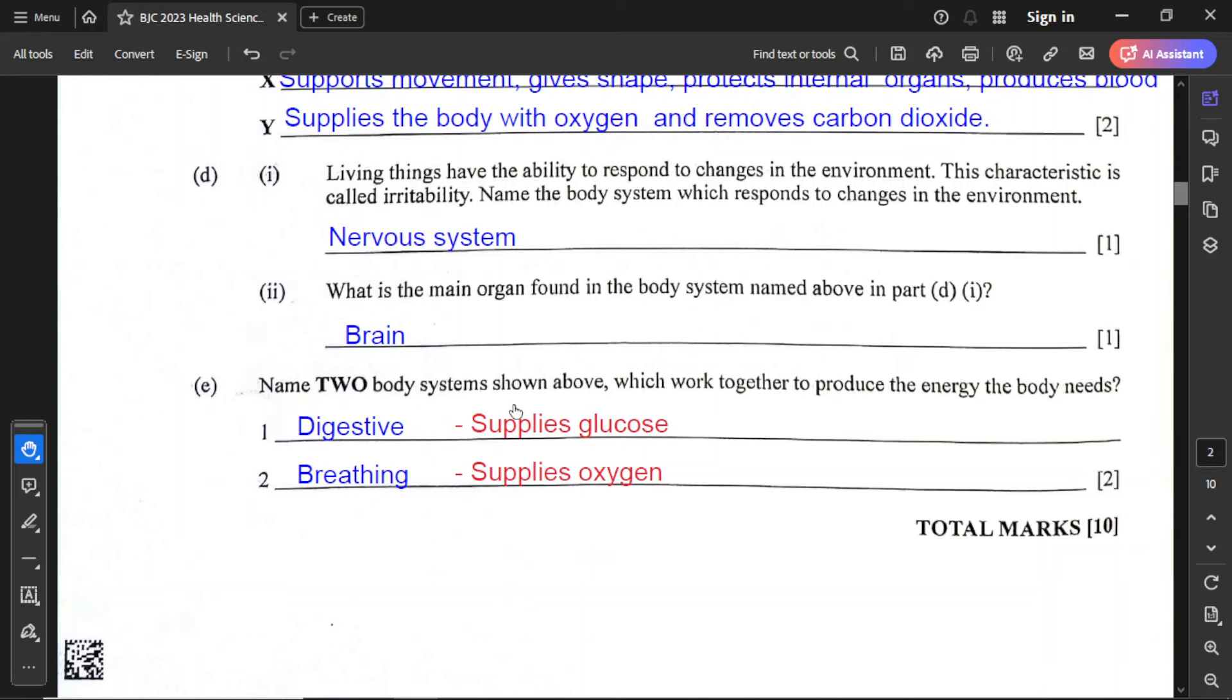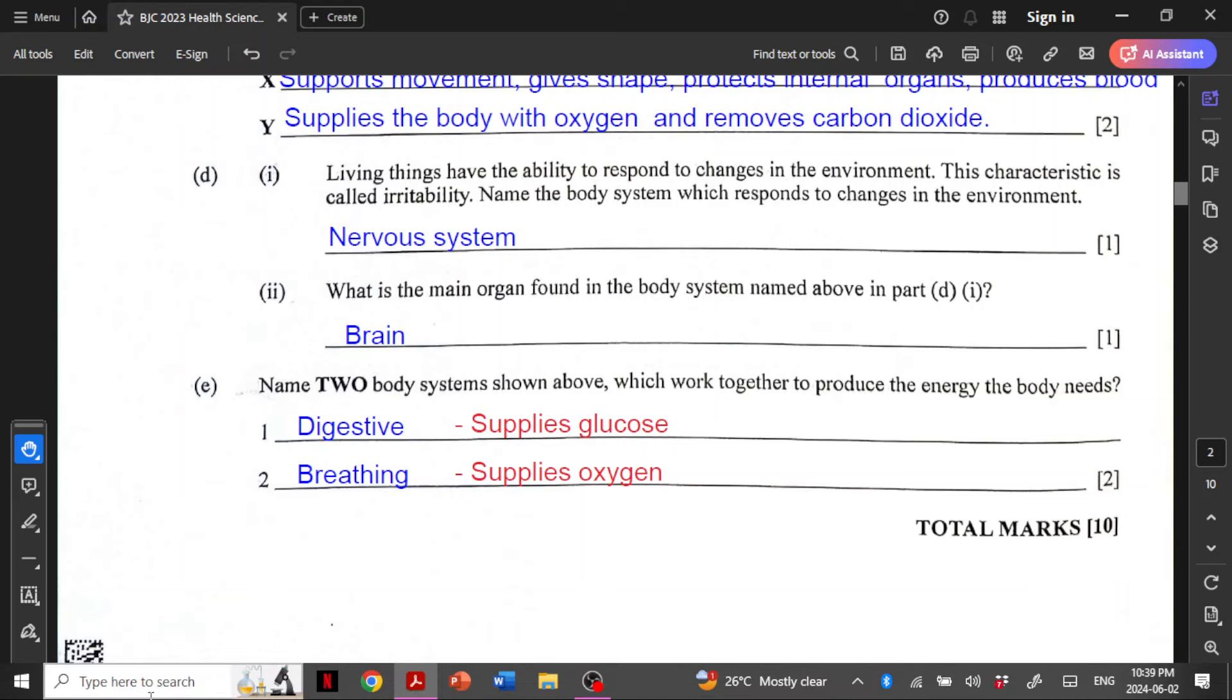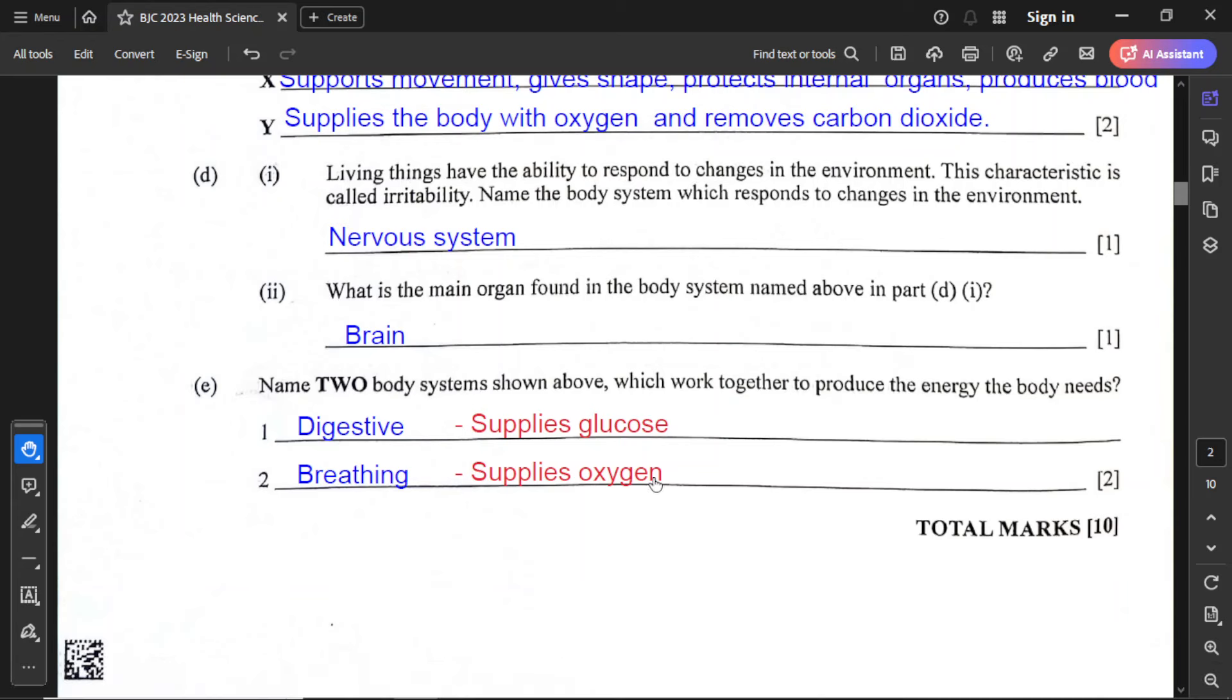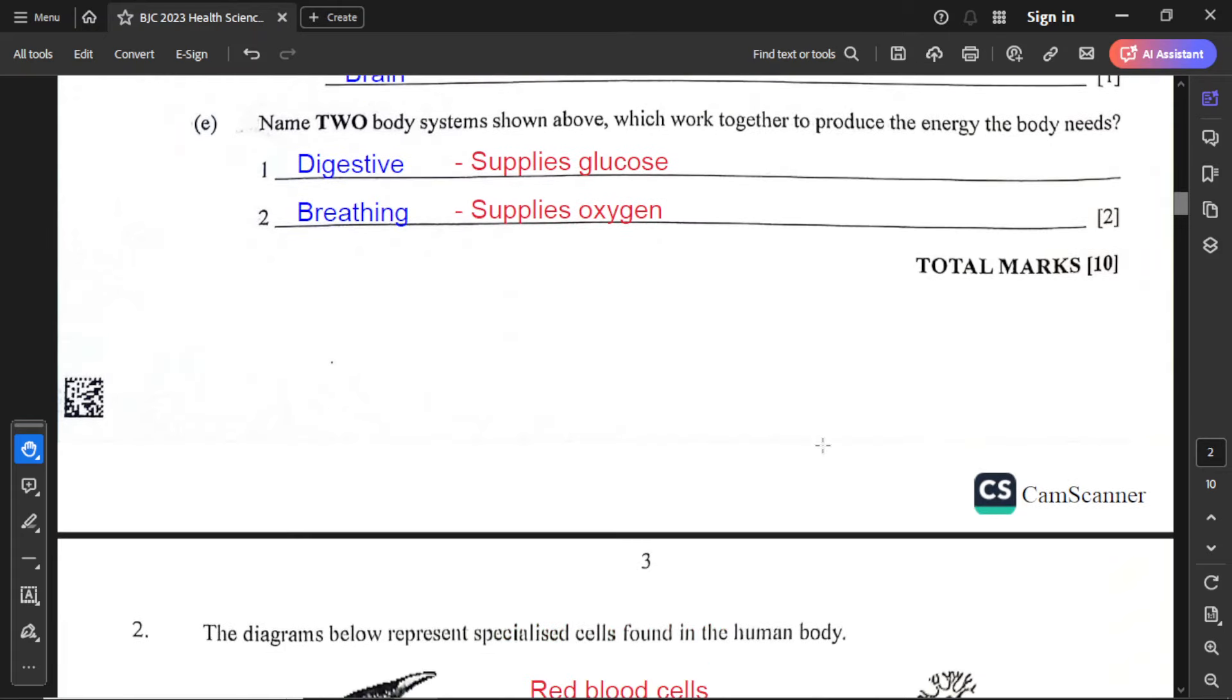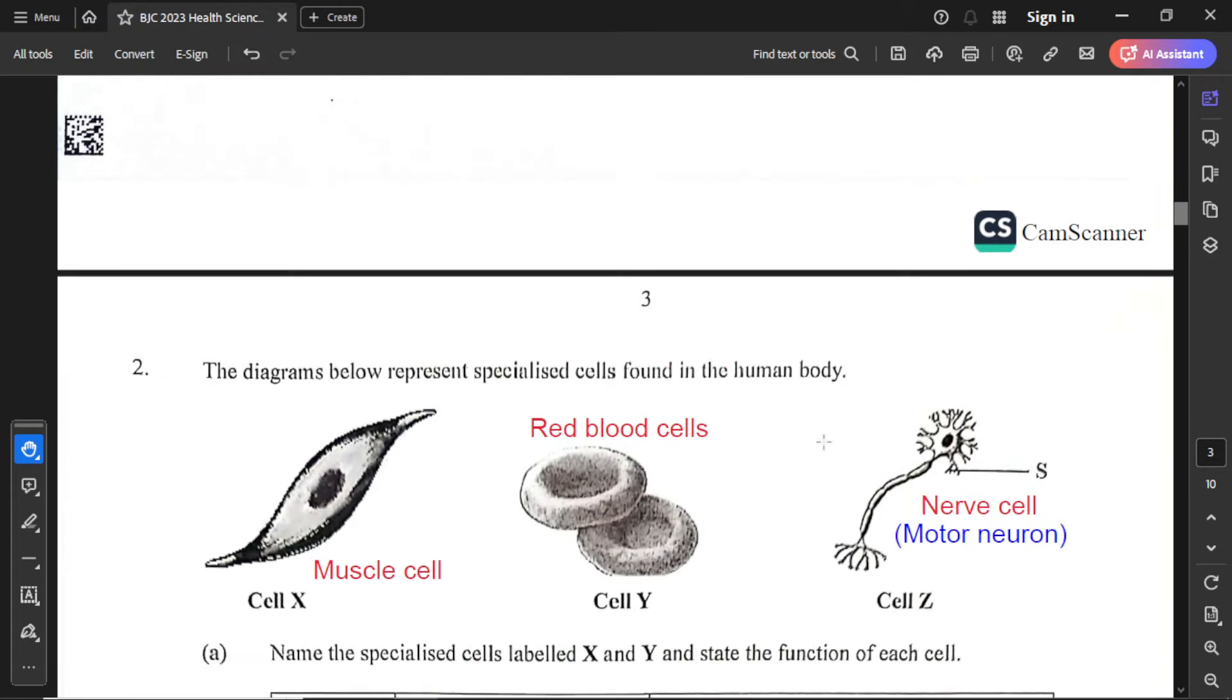For part E, name the body systems shown above which work together to produce the energy the body needs. The two systems that work together to produce energy are the digestive system and the breathing system. How they work is the digestive system supplies glucose or breaks down carbohydrates into glucose, and the breathing system produces oxygen. For respiration, glucose reacts with oxygen to get energy, carbon dioxide, and water. You should know the equation for respiration, especially aerobic respiration.